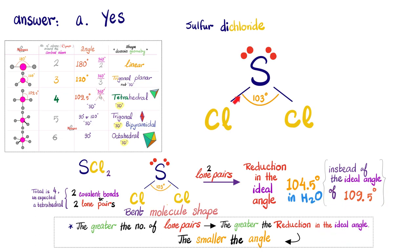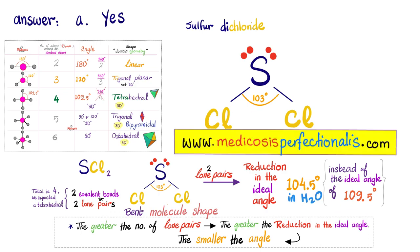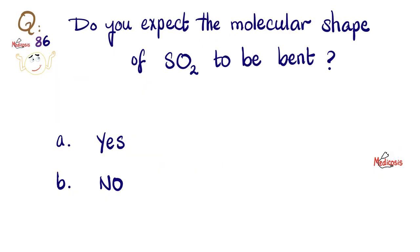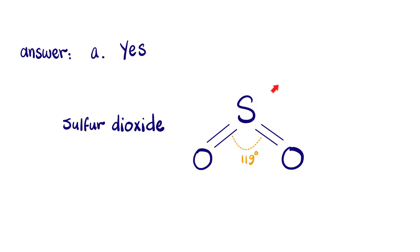With 4 electron groups, the ideal angle should be 109.5°. However, thanks to the presence of two lone pairs, we get a reduction in the angle to about 103° instead of 109.5°. You can download these handwritten notes on my website, medicosisperfectionalis.com. Do you also expect the molecular shape of SO2 to be bent? Also yes.